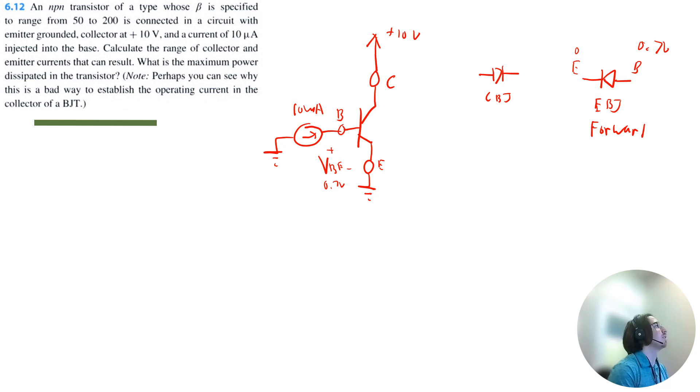Now for the CBJ we have the base at 0.7 volts and the collector at 10 volts. So we're going from low to high which means that the CBJ is reverse biased. When you have a forward biased EBJ and a reverse biased CBJ, you are operating in the active region.